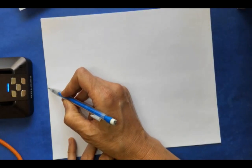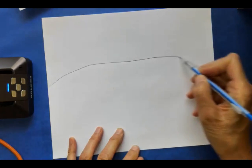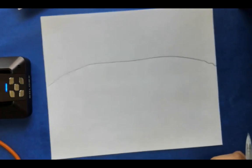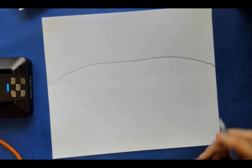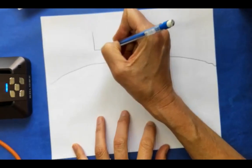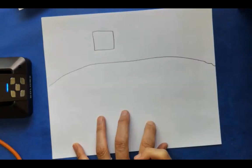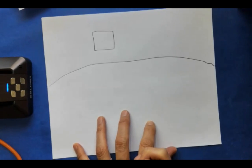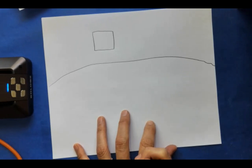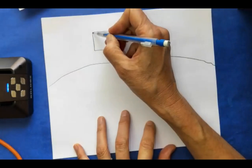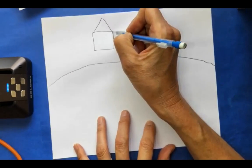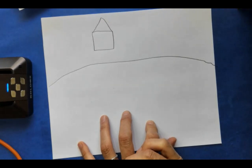All right, our first thing that we're going to do is we're going to come into the middle of our paper and we're going to draw a slightly curved line. That was easy. Now, up in the top of our paper, we are going to start with one square or a rectangle. On top of that, let's add a triangle. These are our easy shapes.